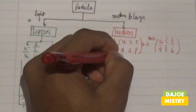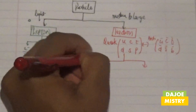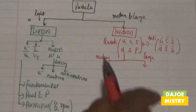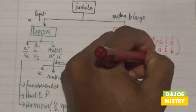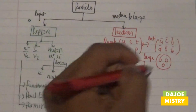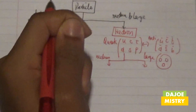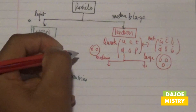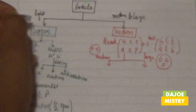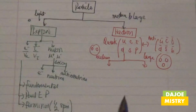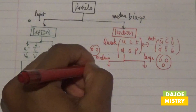Hadrons are mainly divided into two parts: the medium part and the large part. Going from large to medium to light — the large category involves three quarks interacting with each other (note: three quarks, not antiquarks). The medium involves one quark and one antiquark interacting with each other. And leptons, at the lightest level, are just one fundamental particle. So we go from three to two to one.